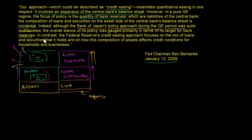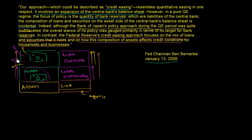In contrast, the Federal Reserve's credit easing approach focuses on the mix of loans and securities that it holds and on how this composition of assets affects credit conditions for households and businesses. So what Bernanke is saying is that we are mechanically doing the same thing that Japan did — we're increasing our balance sheet, which is analogous to printing money, and we are also buying a bunch of stuff just like Japan did. But our approach isn't just focused on the amount of cash we are printing. Our focus is where we're putting that cash to work — how can we use this printed cash to provide liquidity and ease things in certain parts of the economy?